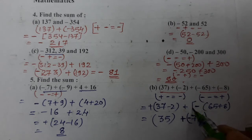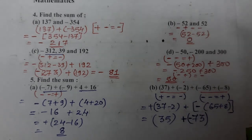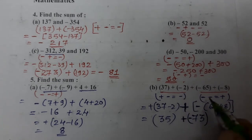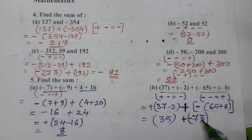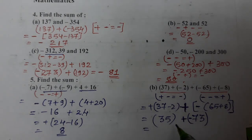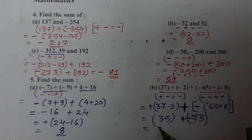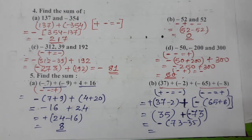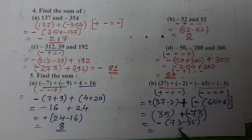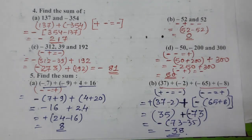Ab yahan bracket lagade lete hain. Minus 73 bada hai, to 73 mein se 35 minus kar dete hain aur negative ka sign lagaate hain. 13 minus 5 = 8, aur 7 mein se 4 gaye 3. So minus 38 is our answer. I hope you understood how to do addition of integers.